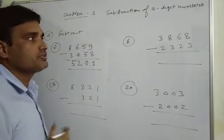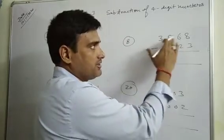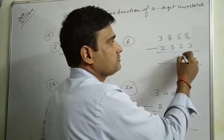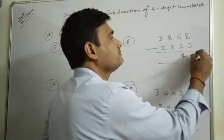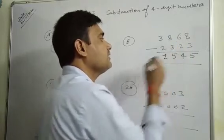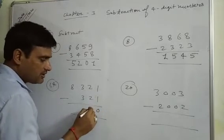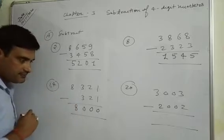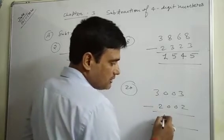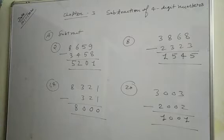Question number 8: subtract 2323 from 3068. 8 minus 3 is 5, 6 minus 2 is 4. 8 minus 3 is 5 and 3 minus 2 is 1. Wait, let me recalculate: 1 minus 1 is 0, 2 minus 2 is 0, 3 minus 3 is 0. 3000 minus 2000 is 1000.